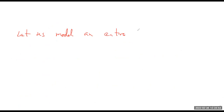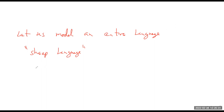Let us model an entire language using an automaton. This is a classic example from natural language processing. We'll start with something easier than English — the sheep language. What do sheep sound like? 'Ba.' So what are some words in that language? 'Ba,' 'baa,' 'baaa,' and so on. That's kind of the language.